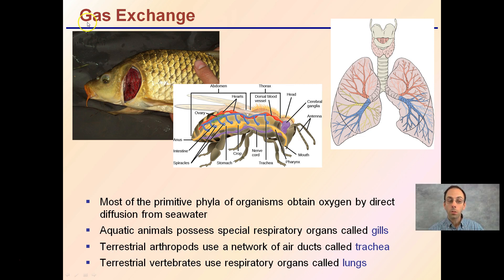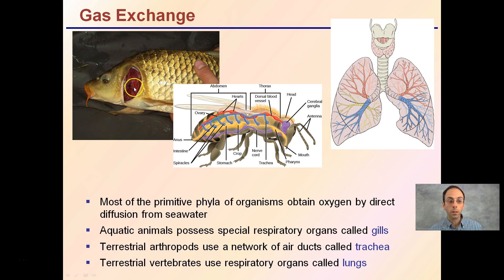Looking at gas exchange in the general sense, most primitive organisms obtain oxygen directly from the diffusion of seawater — those are your ocean-based organisms, not the main focus of this lecture. Aquatic animals like the carp possess special respiratory organs called gills. This focus is on land-based organisms such as the bee. Arthropods use a network of air ducts called trachea, and we use special organs called lungs to allow an efficient transfer of gases.